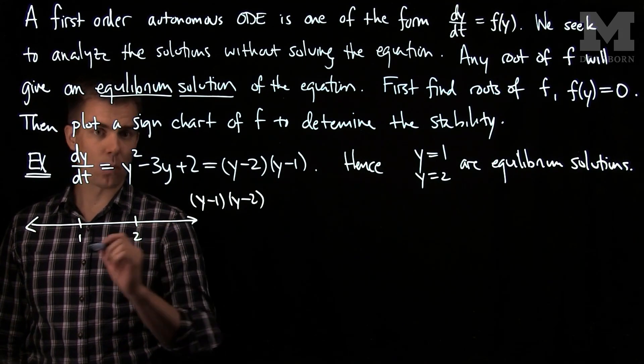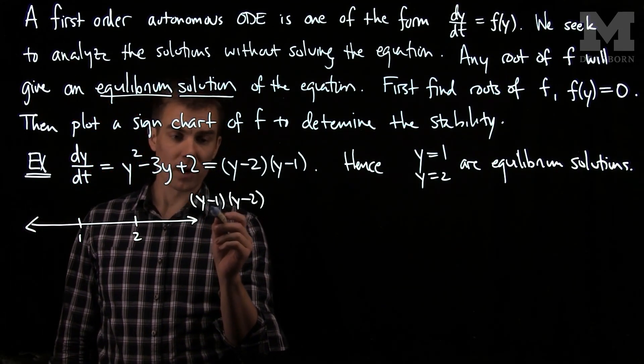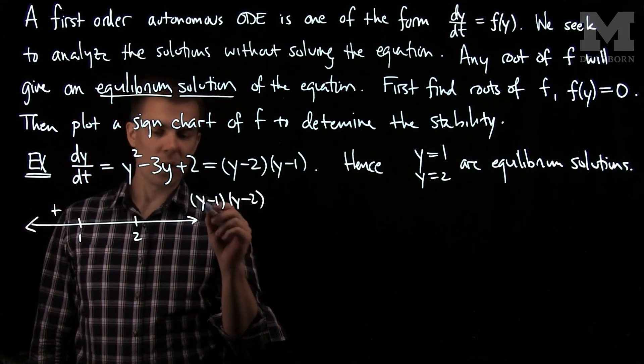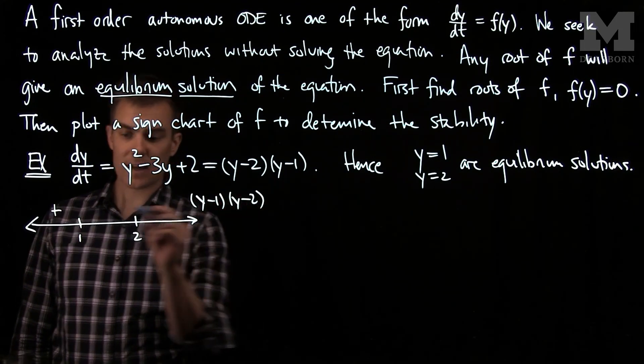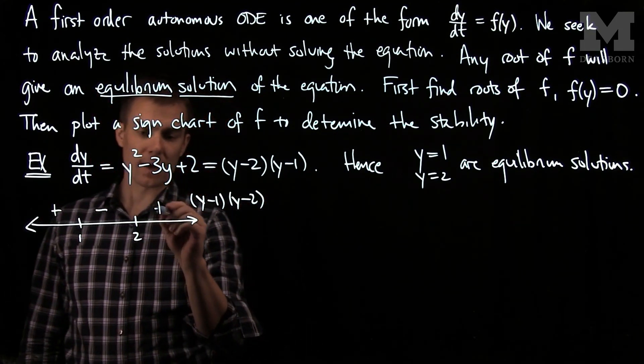When I plug in a number y that's less than 1, I'll have a negative times a negative, which will be positive. When I plug in a number between 1 and 2, I'll have a positive and a negative, which will give me a negative. And when I plug in a number larger than 2, I'll get a positive quantity.